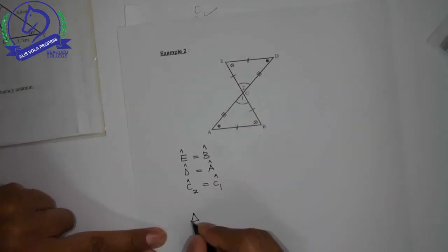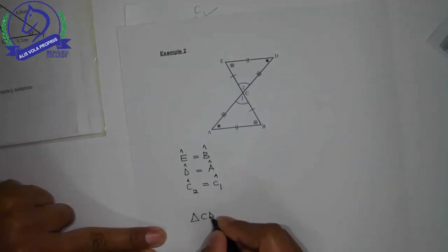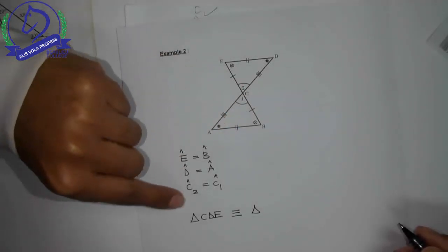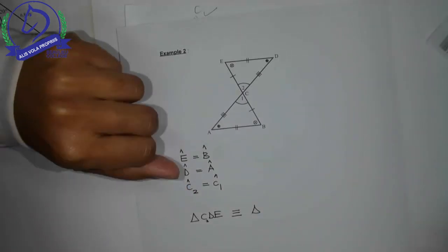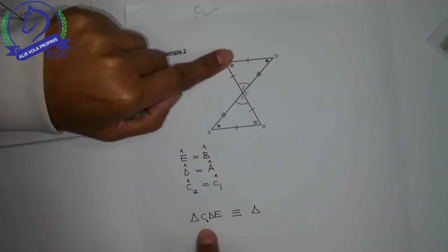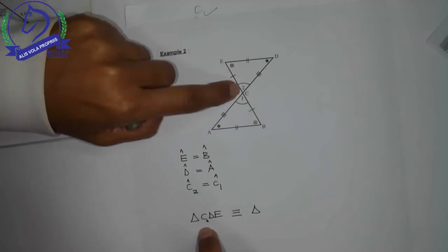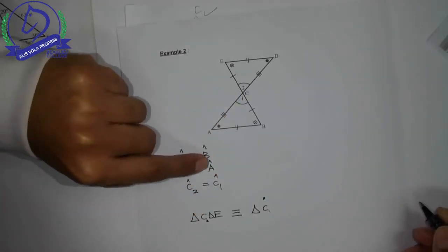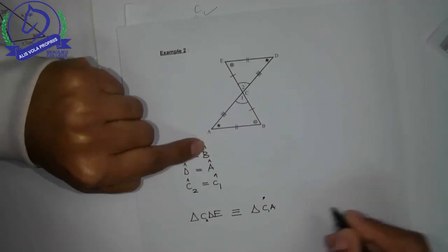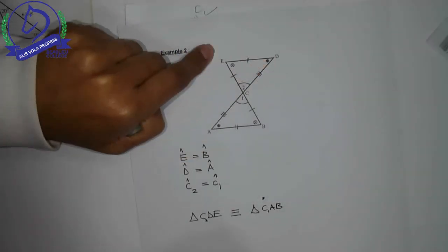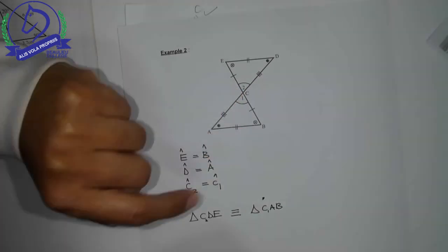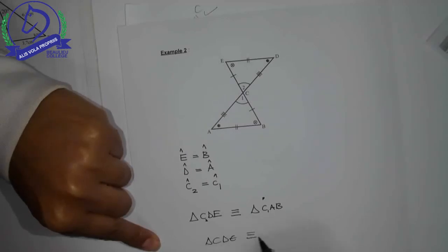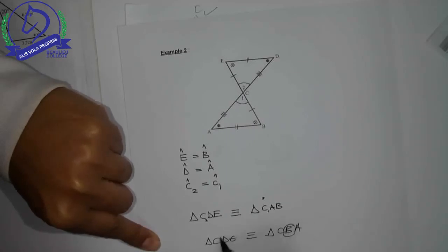I'm going to show you how we can get the sides that are equal by just naming the triangles correctly. So let's say triangle CDE - triangle CDE will be congruent to which triangle? Obviously ABC, but how would I name it? C2 is equal to C1, so I've got to start with C in that triangle. D is equal to A, so I've got to put A next. And then E is equal to B, so I've got to put B. So triangle CDE is congruent to triangle CAB. If I said CDE is congruent to triangle CBA, this will be incorrectly named because angle B is not equal to angle D. So this is incorrect naming of triangles.